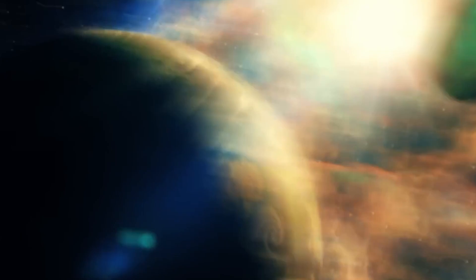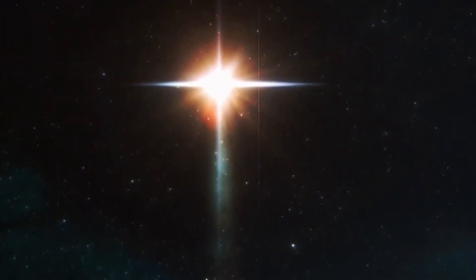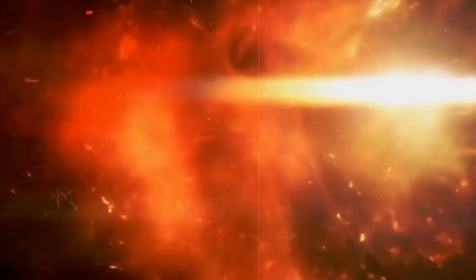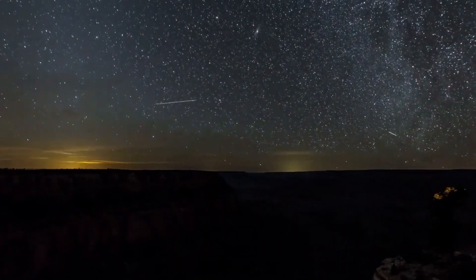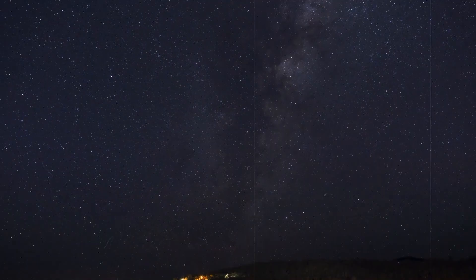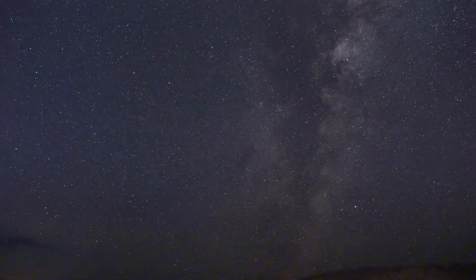During this time, Betelgeuse was probably a blue supergiant and a thousand times hotter and brighter than the sun. In the middle of Betelgeuse's life, the hydrogen supply in the core was already exhausted, and the star began to fuse helium into carbon and oxygen.